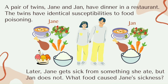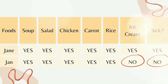For example, a pair of twins, Jane and John, have dinner in a restaurant. The twins have identical susceptibilities to food poisoning. Jane orders soup, salad, chicken, carrots, rice, and ice cream. While John orders soup, salad, chicken, carrots, and rice, but no ice cream. Later, Jane gets sick from something she ate, but John does not. Looking at the table, both of them ate soup, salad, chicken, carrot, and rice — the only difference is that Jane had ice cream, which is identified as the cause of her sickness.